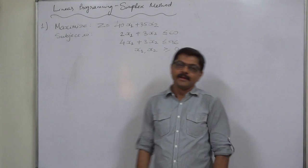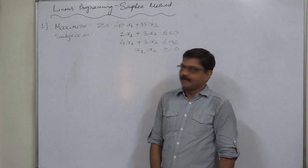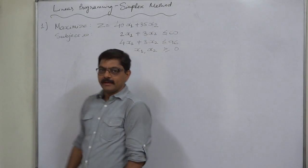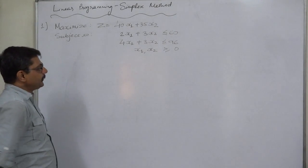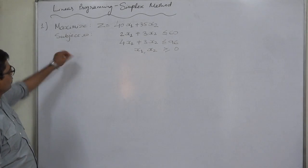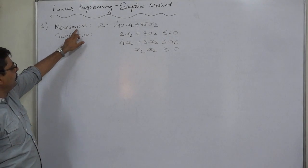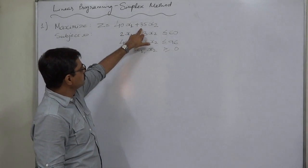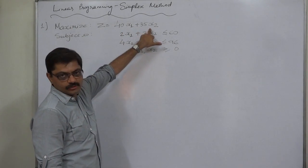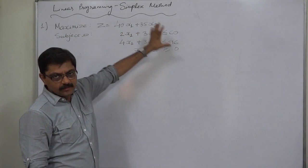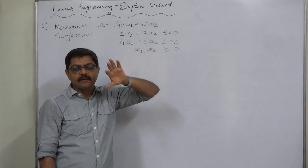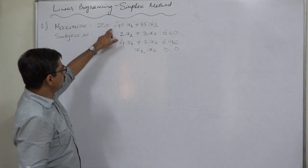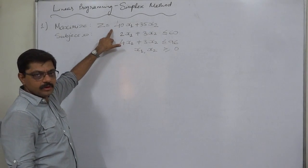Hello friends, now we are going to take a very simple case of a linear programming problem to solve it through the simplex method. The problem is: maximize Z equals 40x1 plus 35x2. This is a summary of a problem in which we need to maximize the profit, so this is called the profit function or objective function.